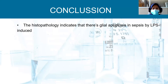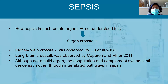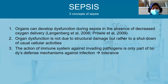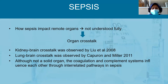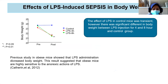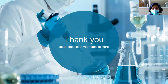In conclusion, we do not agree with the second concept of sepsis — that organ dysfunction is not due to structural damage — because we found there is structural damage, especially in the glial cells in our study. Thank you. Good afternoon.